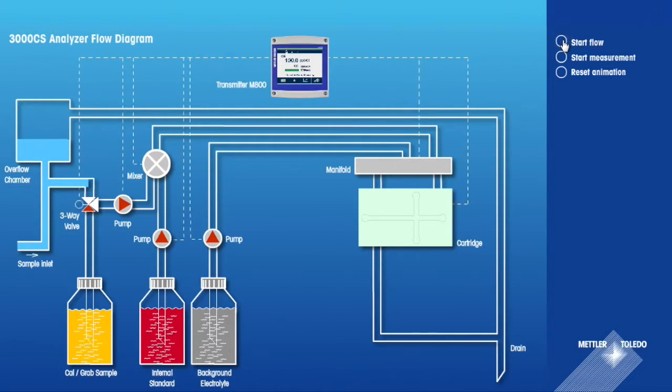The 3000 CS Analyzer uses microfluidic capillary electrophoresis, an ionic separation technology, to isolate and measure ionic contaminant levels.